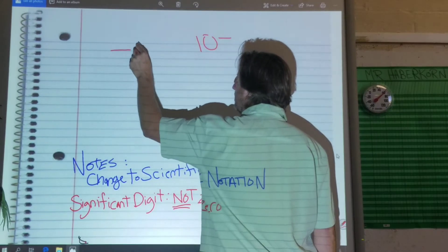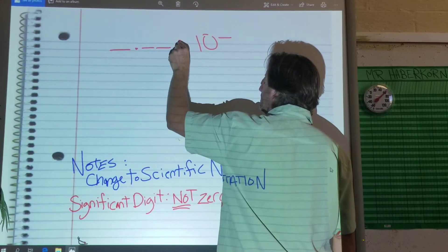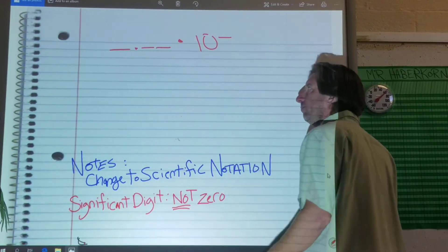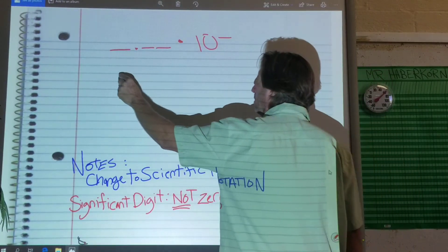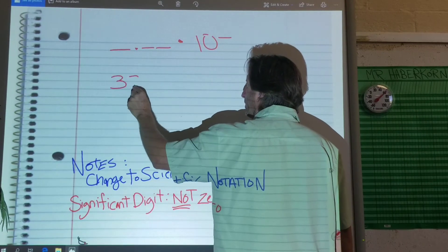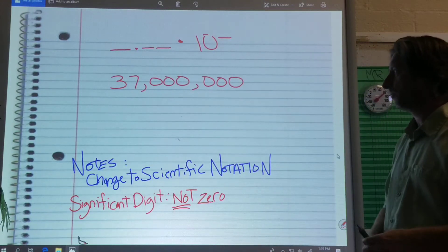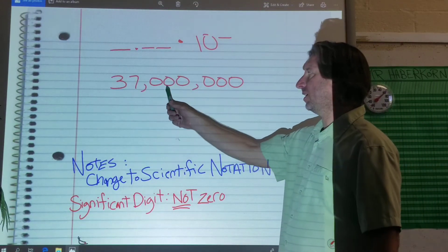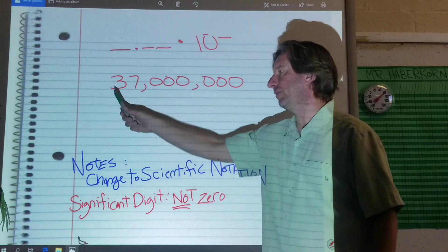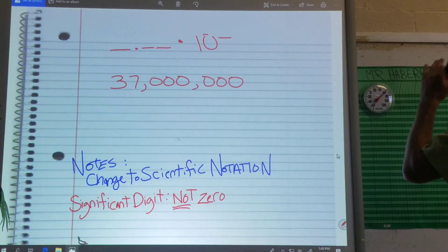So space, dot, space, space, times 10 to the sum. Let's do 37 million. Remember these? It's thousands, 10,000, 100,000, million, 10 millions, right? So 37 million.